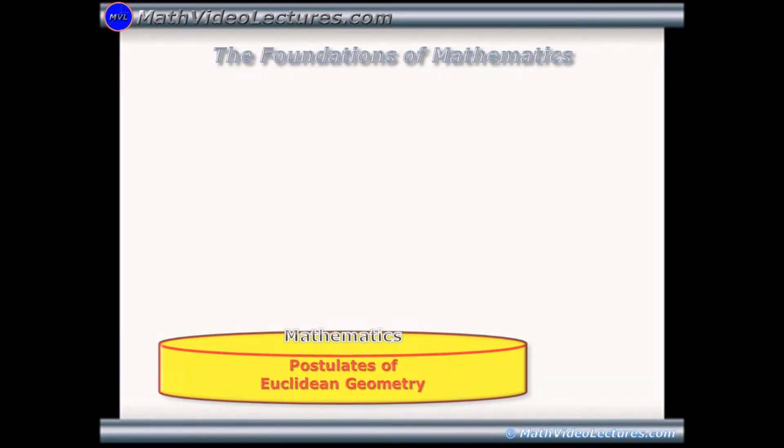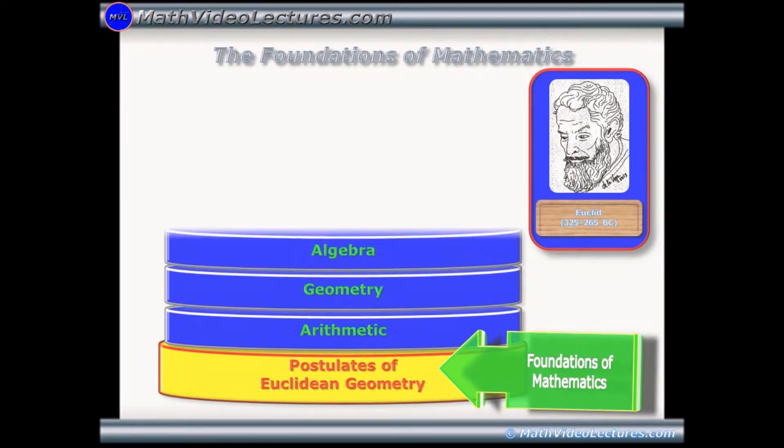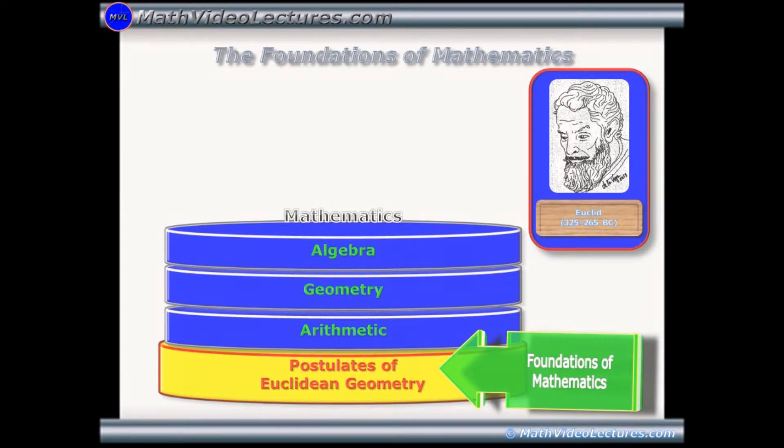For more than 2,000 years, the axioms of Euclidean geometry served as the foundation for the development of mathematics. However, a series of discoveries during the 17th, 18th, and 19th centuries led to question the solidity of these foundations, and as a consequence to the crisis they suffered at the beginning of the 20th century.